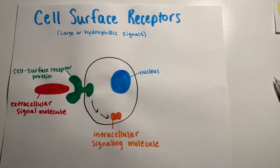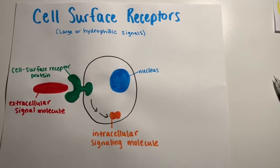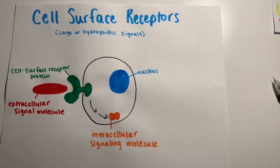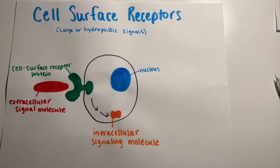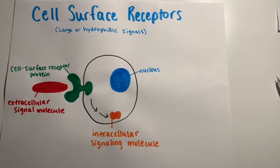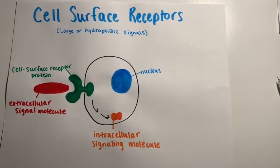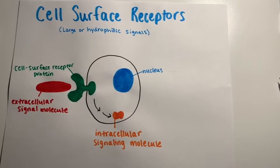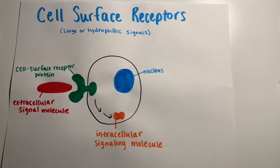This is a diagram of what the cell surface receptor looks like. In the red, we have the extracellular signaling molecule, which is too large or hydrophilic to pass through the plasma membrane. So it relies on the cell surface receptor protein, which is colored in green. Once it gets through, it then generates the intracellular signaling molecule.